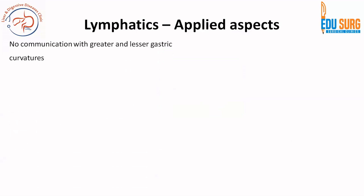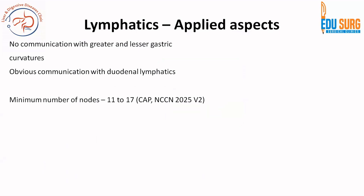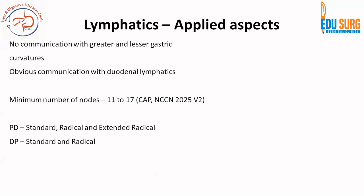Coming to some important concepts, we have to understand that there is no communication in the lymphatics between the greater and lesser gastric curvature, but there is definitely a communication between pancreatic and duodenal lymphatics. When we see the minimum number of nodes to be dissected, the average is 12, but between American pathology guidelines versus the NCC and 2025 recommendations, the minimum number of nodes ranges from 11 to 17. So at least 11 nodes need to be resected in a pancreaticoduodenectomy.